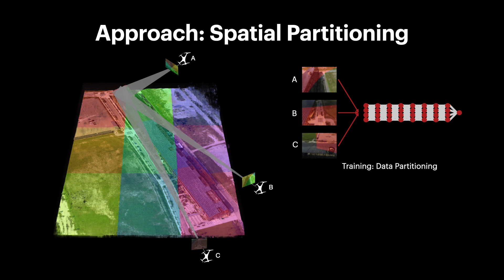To do this filtering, we sample points along the camera ray corresponding to each training image pixel, and add that pixel to the training set for only the spatial cells it intersects. For example, the red cell is trained on a subset of pixels from images A, B, and C. This pruning reduces the size of each training set by 10x on average.